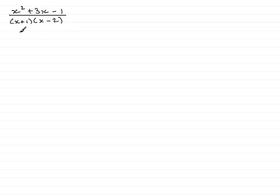Now the denominator, if we multiply this out, gives x squared minus 2x plus x minus 2, which is really x squared minus x minus 2. And we need to divide this into the numerator.